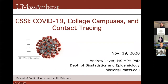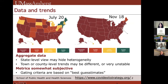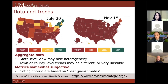Thank you, everyone, for coming and giving me the opportunity to talk about this incredibly complicated pandemic scenario. This is a comparison of where the country was as a whole on July 20th and where we are today from a website called COVID Exit Strategy. Each individual state is a single color, which is potentially misleading because there's a lot of heterogeneity within individual states.